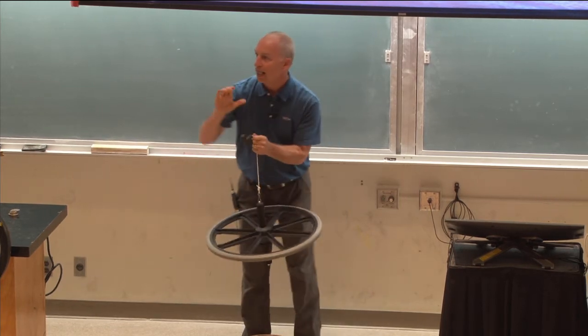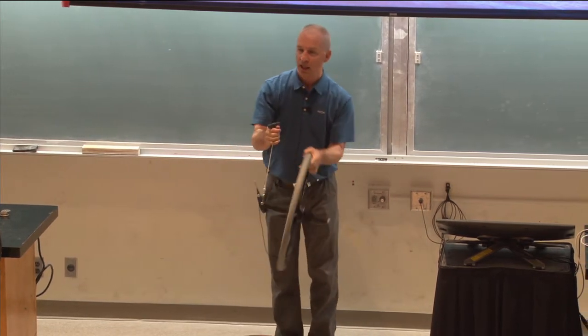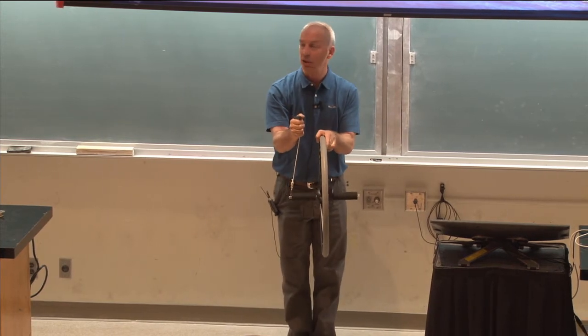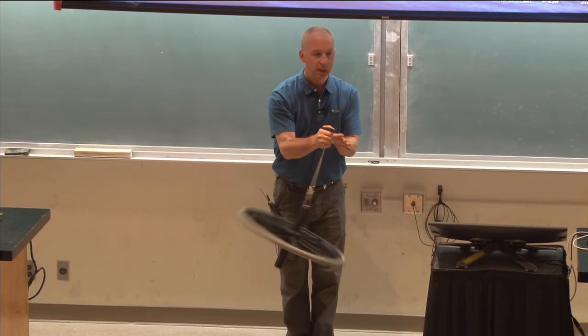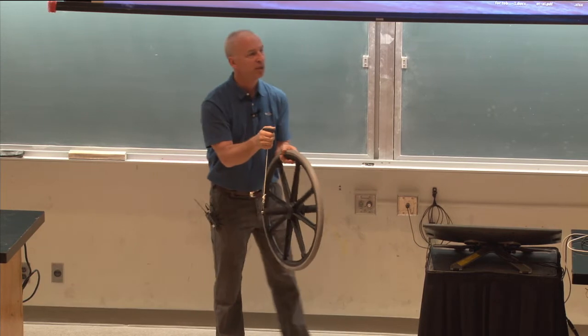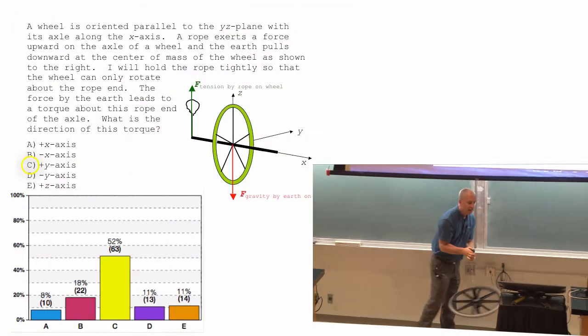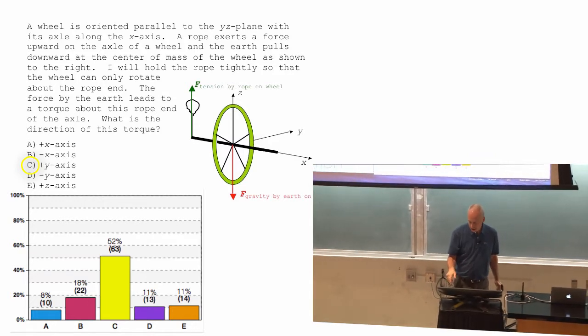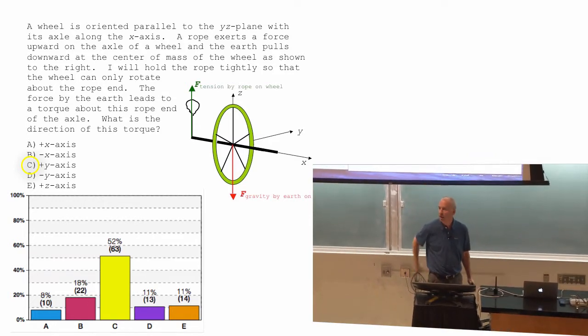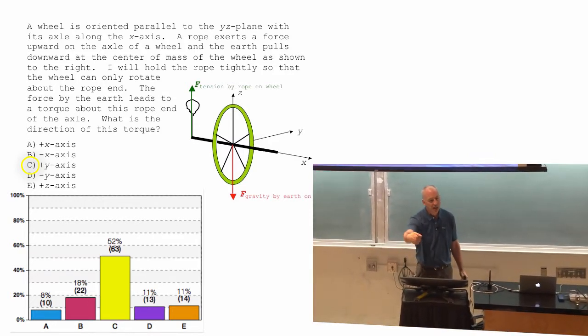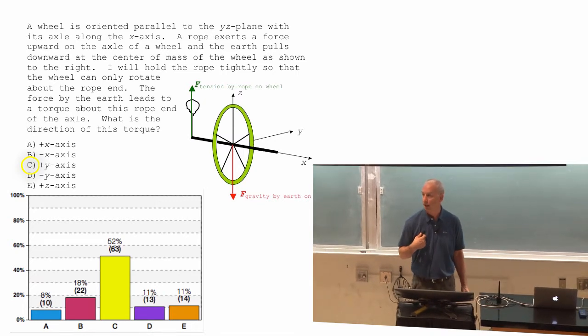Which by right hand rule, it means an angular momentum change away from you. And so, a torque vector that points away from you. And the way I had it drawn there, I meant away from you to be along the positive y direction, the positive y direction coming backward like that.